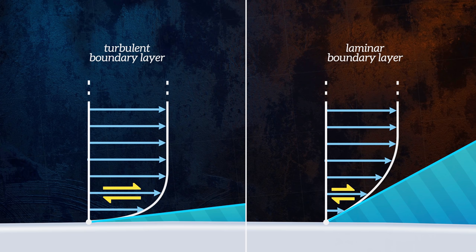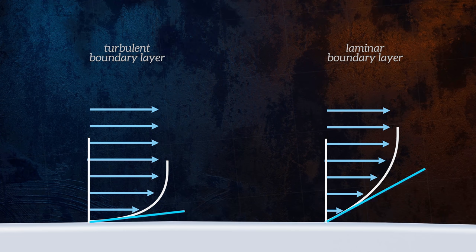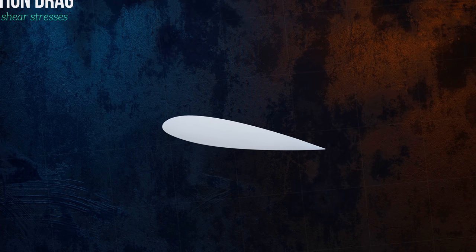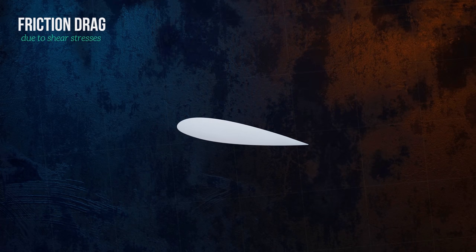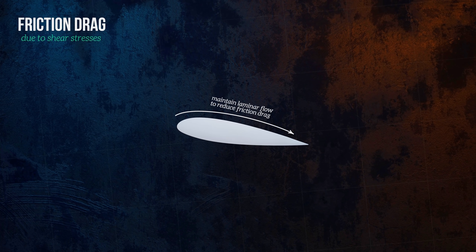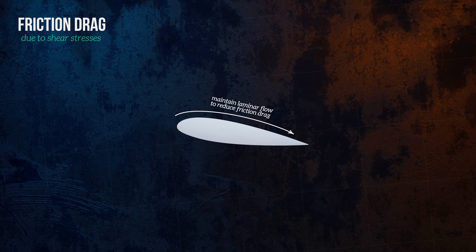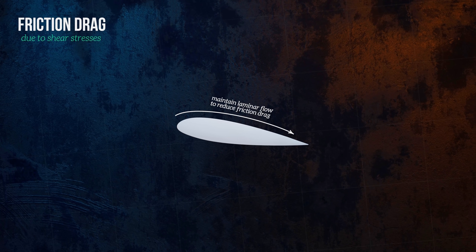So to reduce friction drag, you want to delay the transition to the turbulent regime and maintain laminar flow for the largest possible distance around the object. It has been estimated that obtaining laminar flow over the wings and fin of commercial aircraft could reduce the total drag force by around 10 to 15 percent. But this is very difficult to achieve.